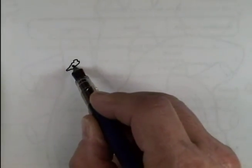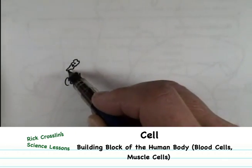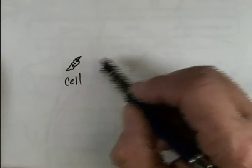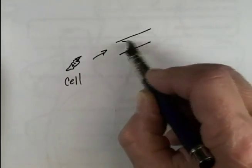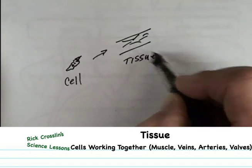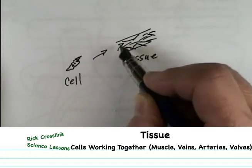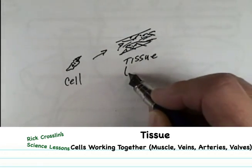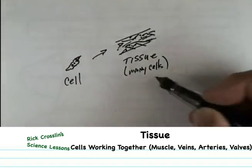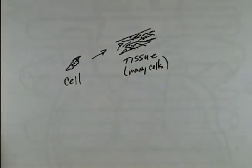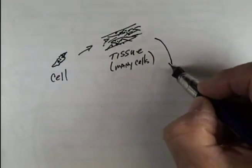In your science book there's a whole section on the heart and circulatory system. One of the smallest parts of the human body is the cell — our body is made up of all types: muscle cells, blood cells, nerve cells. When cells are put together in a certain way they turn into tissue. Tissue is made of many cells, so you could have heart tissue or skin tissue.